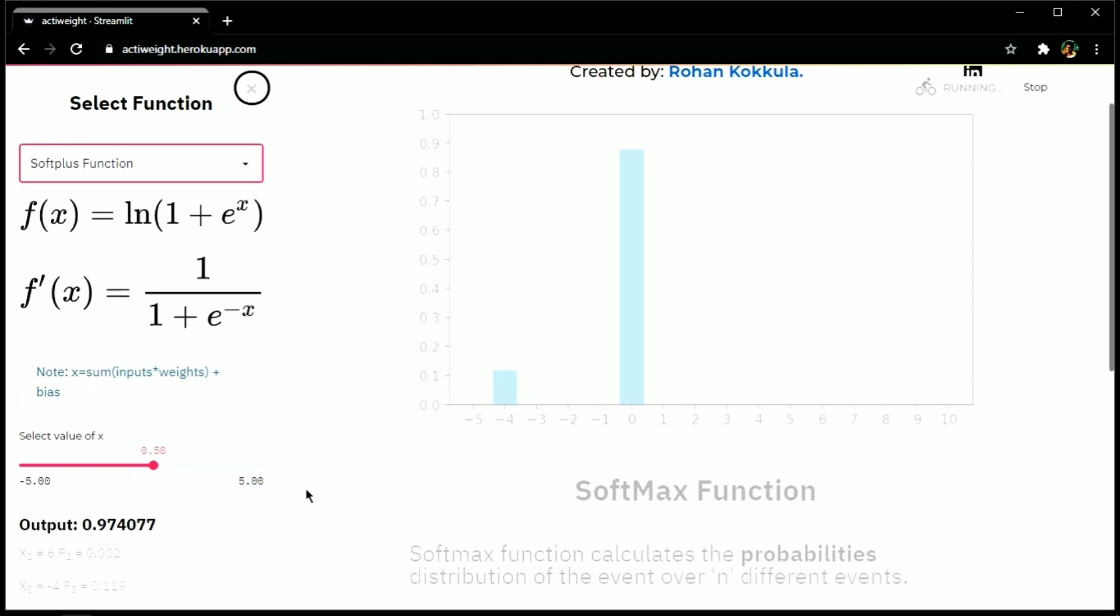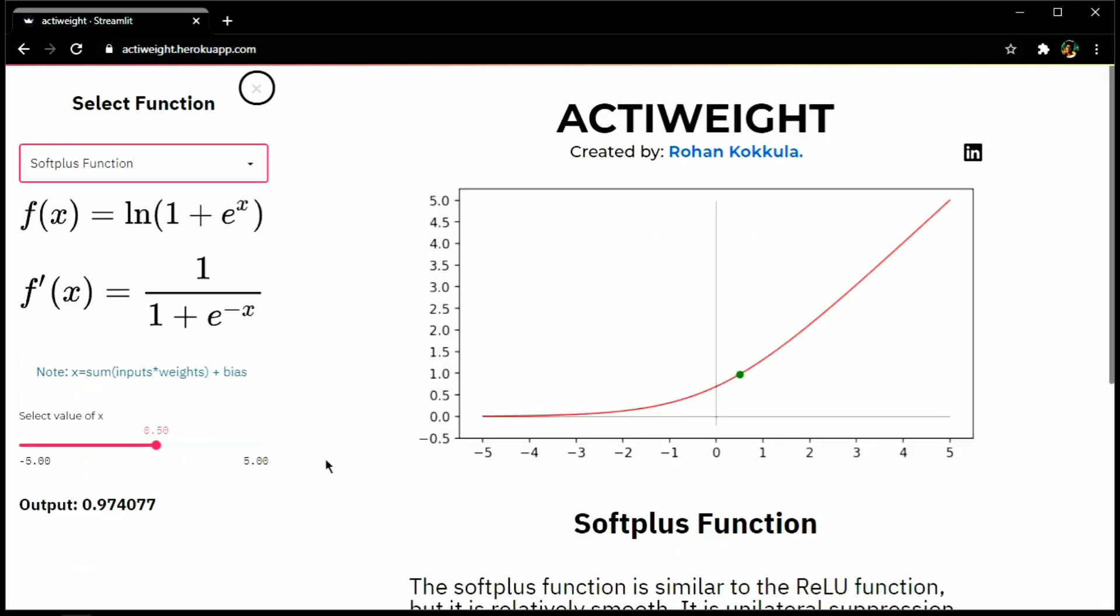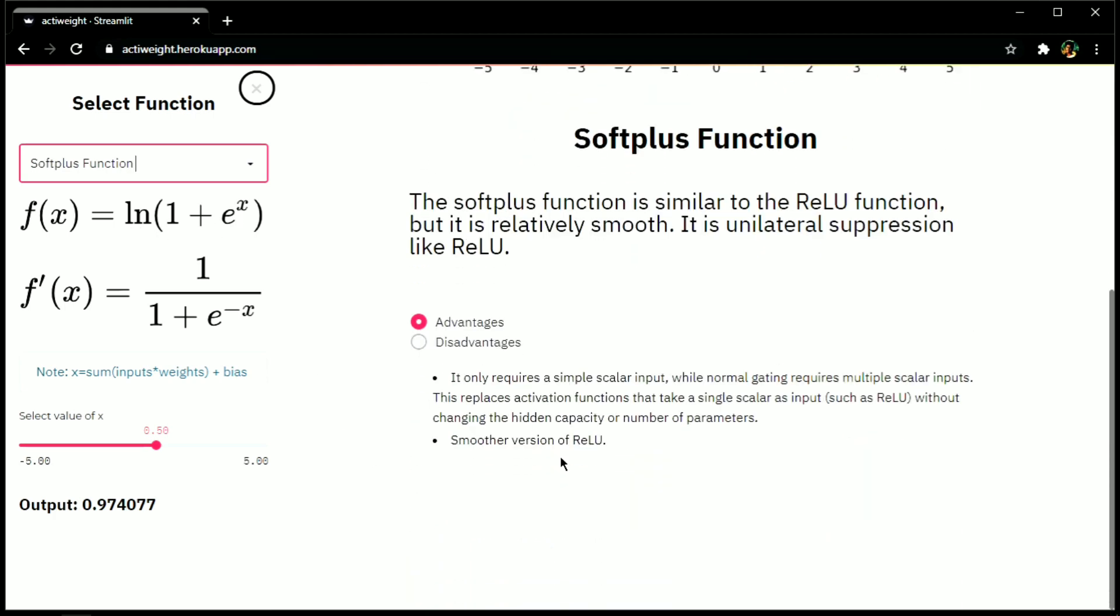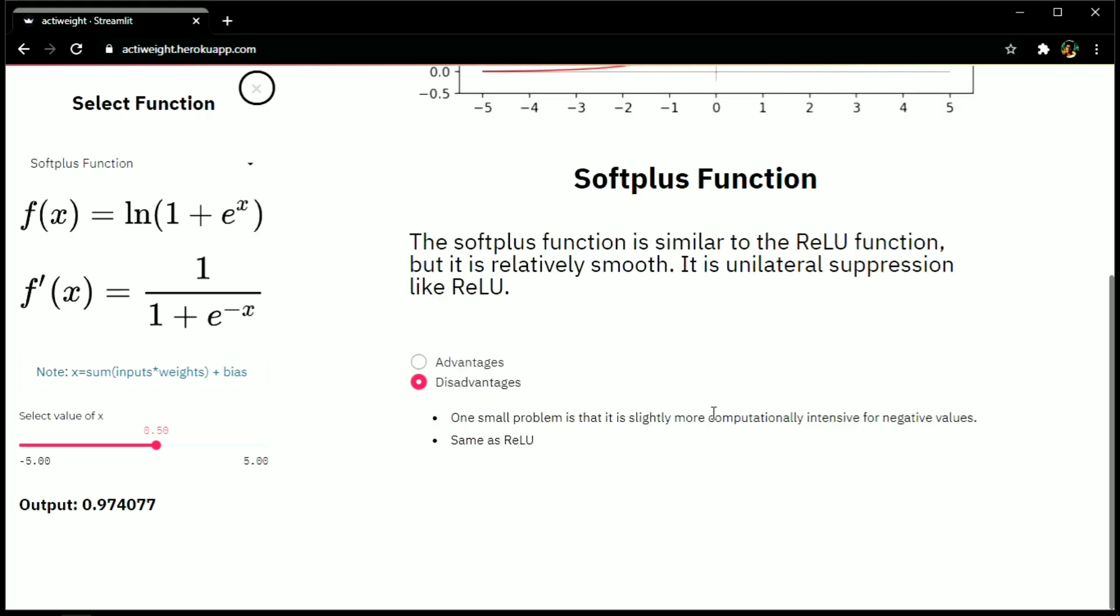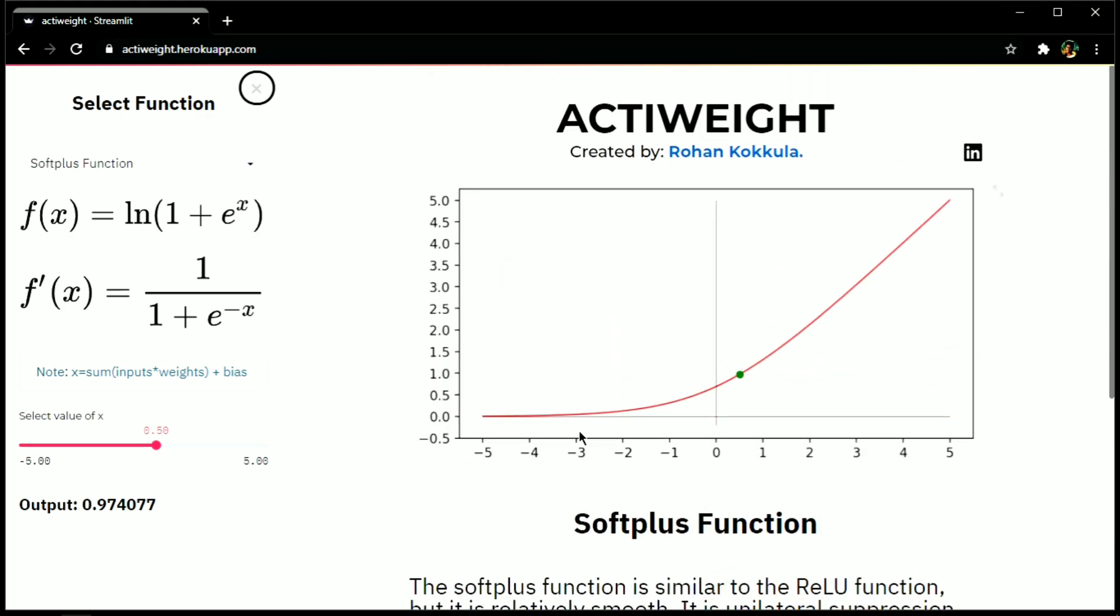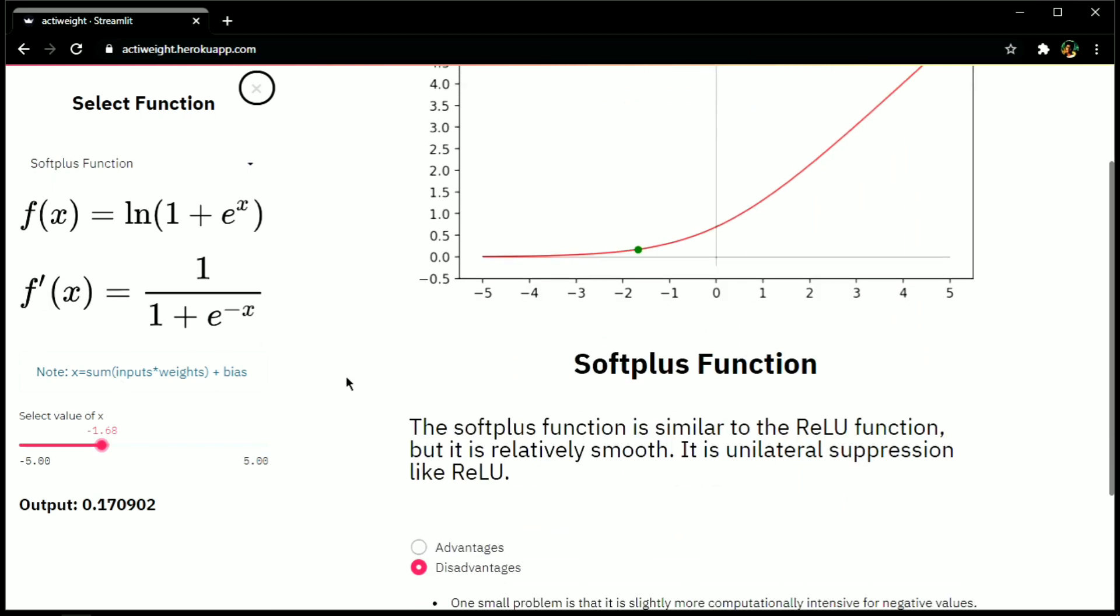Here comes the next activation function, softplus. This is just a smoother version of relu function. And as I previously said, if there's an exponent, you need to pay for higher computation. Suppose input is minus 0.001. So in case of relu, due to negative value, it deactivates the neuron.